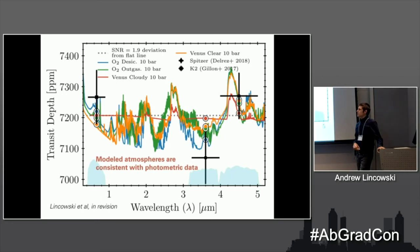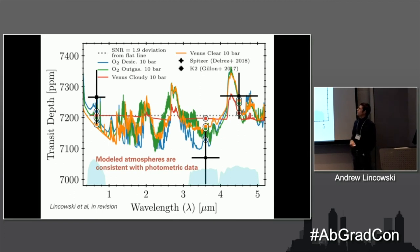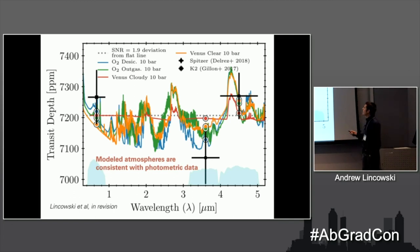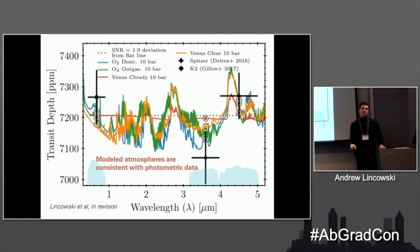What data do we have now? We looked at the photometric bands from Spitzer and Kepler that are currently available and find that our models are broadly consistent with the data. However, Spitzer really struggles to characterize a terrestrial planet — it doesn't rule out any of the atmospheric scenarios. The Spitzer data points are consistent with essentially a flat line, but at least the model spectra are going in the right direction.